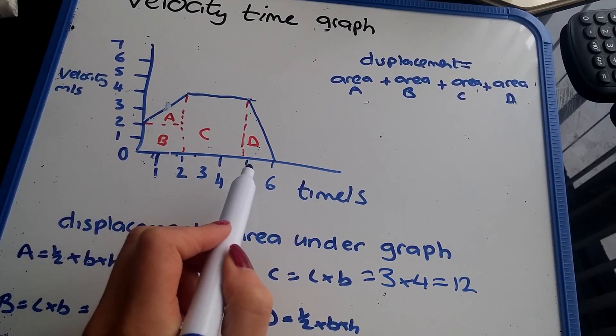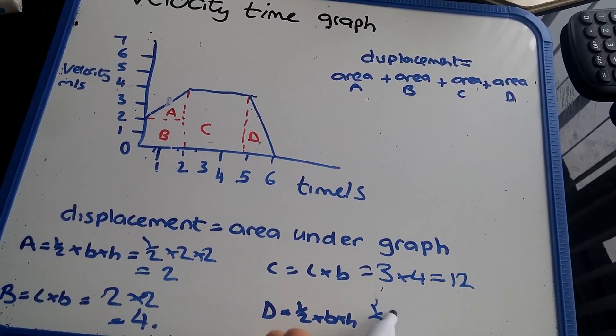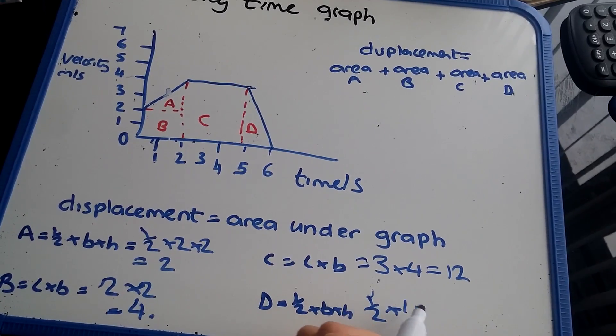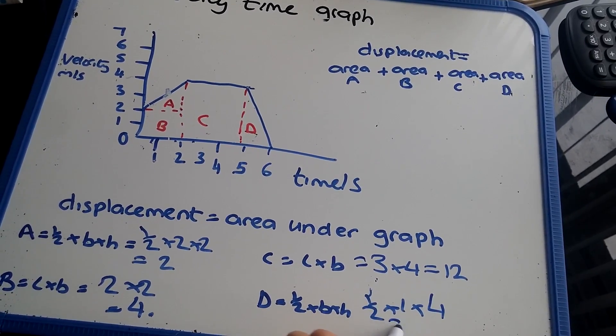And D is another triangle, so it's a half times 1 times 4. So it's half of 4, which is 2.